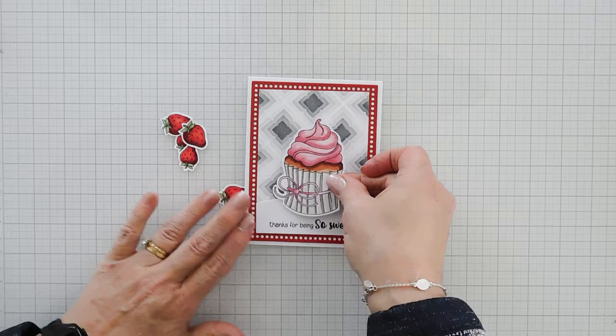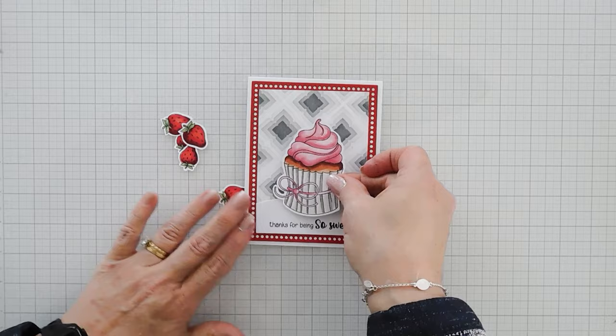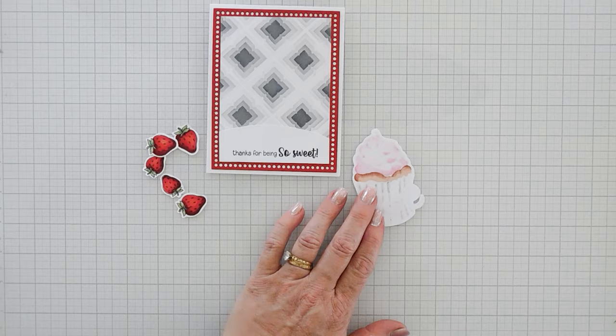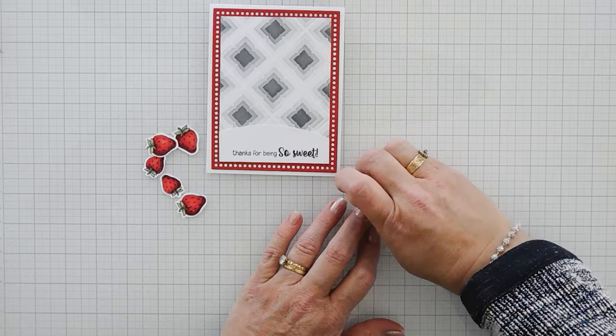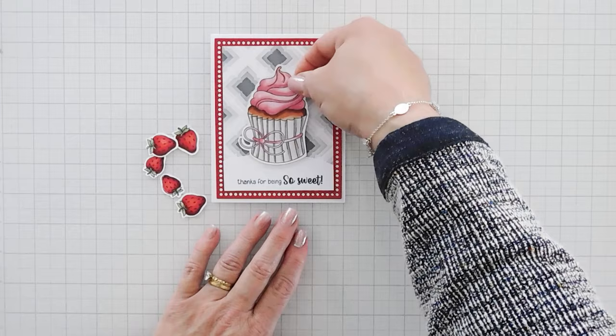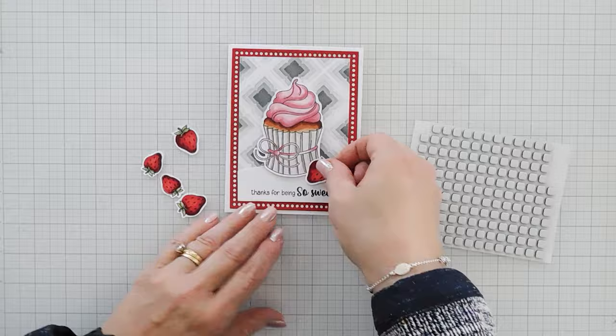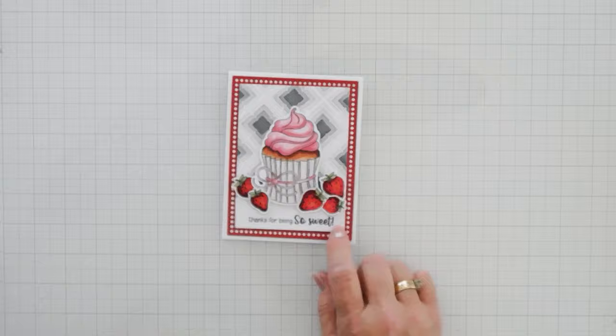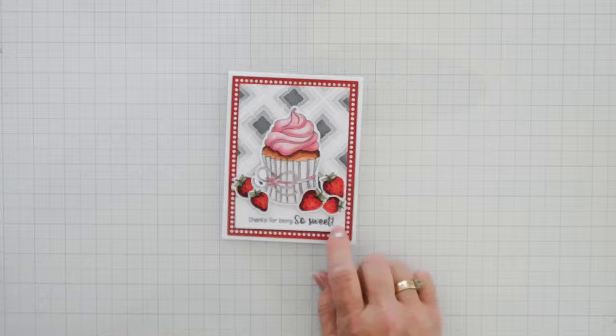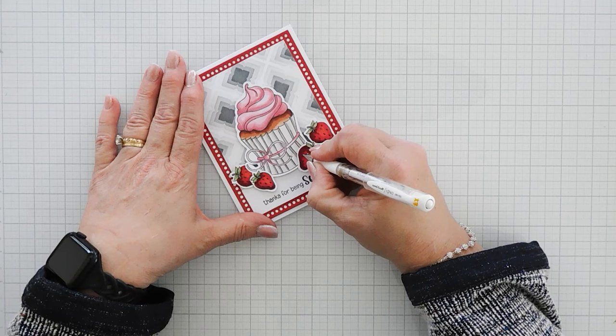I'm going to add this to my card front. And we're going to add our cupcake. I'm going to pop up my cupcake with some foam tape. And I'm going to place this right in the center here. And then using some small foam squares, we're going to add our strawberry. We're going to add a few. When I colored in my strawberries, I actually went over the strawberry dots. Let me show you. Over here. So I'm going to take my white gel pen and I'm going to add some white detail over my strawberries.